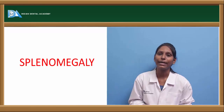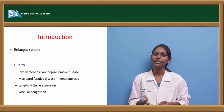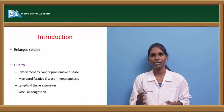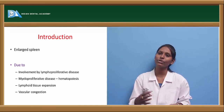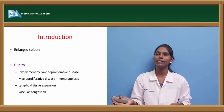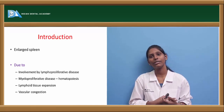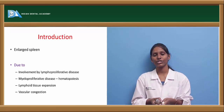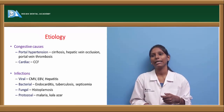Coming to splenomegaly — the name itself indicates it is an enlarged spleen. It is also a manifestation, not a separate disease entity. It can be because of involvement by any lymphoproliferative or myeloproliferative diseases, hematopoiesis, lymphoid tissue expansion, or vascular congestion. These four factors can lead to splenomegaly.